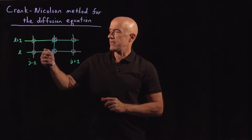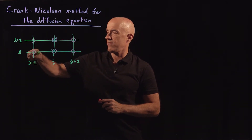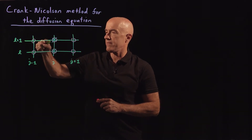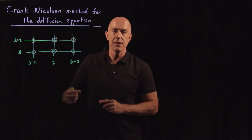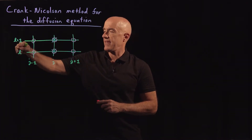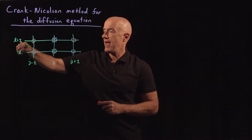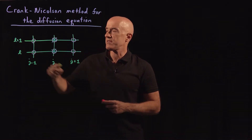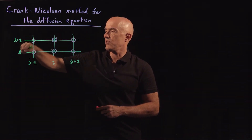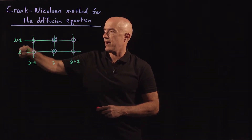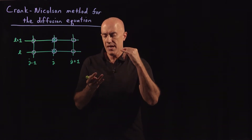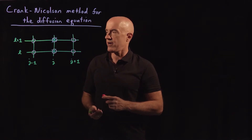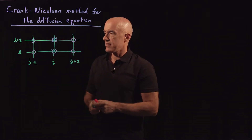Because we're averaging the spatial derivative between the L and the L plus 1 time, this difference in time then becomes second order at the average time — at the time halfway between the L and the L plus 1 time step. So you can view this method as essentially calculating U at the midpoint between the L and L plus 1 time step. Both the time stepping and the space stepping become second order, which is why this method is liked.